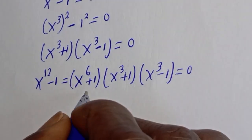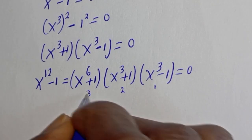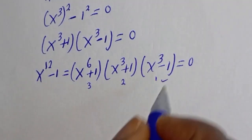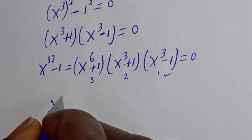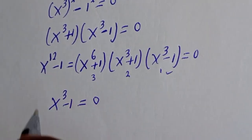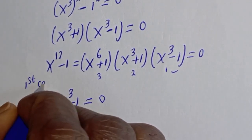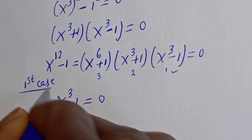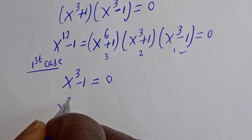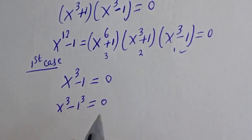So we have three cases here. Case 1, case 2, and case 3. Let's start with Case 1: s raised to power 3 minus 1 is equal to 0. This is the same thing as s raised to power 3 minus 1 cubed is equal to 0.